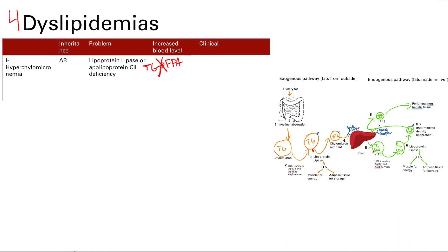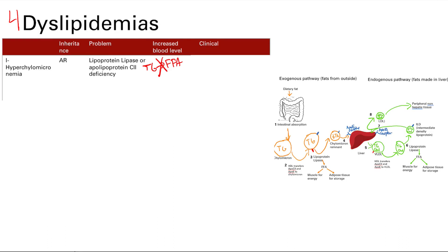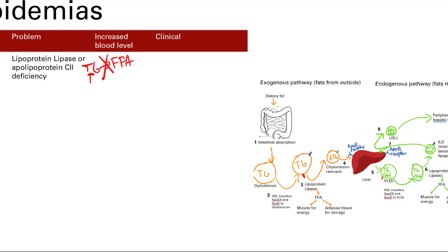So if that pathway doesn't work, what will be increased? Well, lipoprotein lipase acts on the chylomicrons and on triglycerides, so if it's not working, both of those will be increased. Cholesterol will also be increased. So you're going to have high chylomicrons, high triglycerides, and high cholesterol.